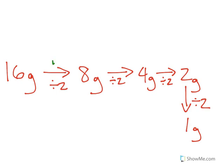Now, if we count the number of arrows. Look, here's 1, 2, 3, and 4. There's 4 arrows. That means there's actually 4 half-lives that have occurred.